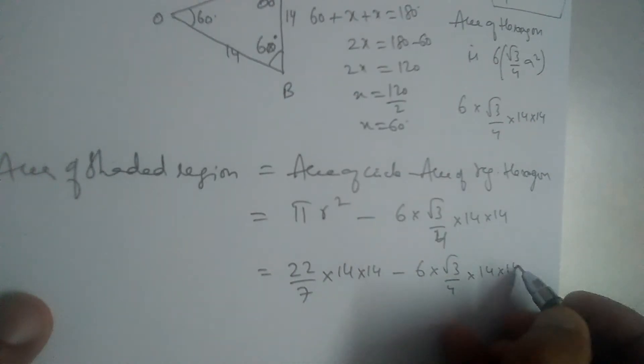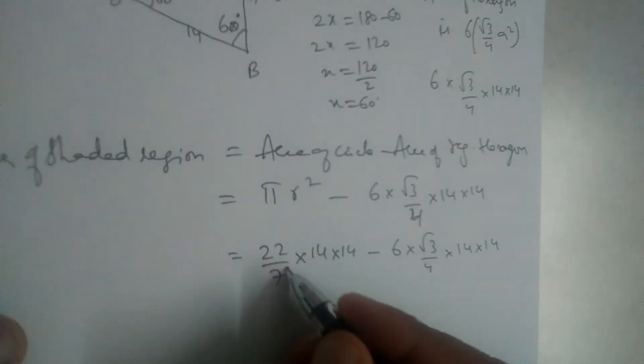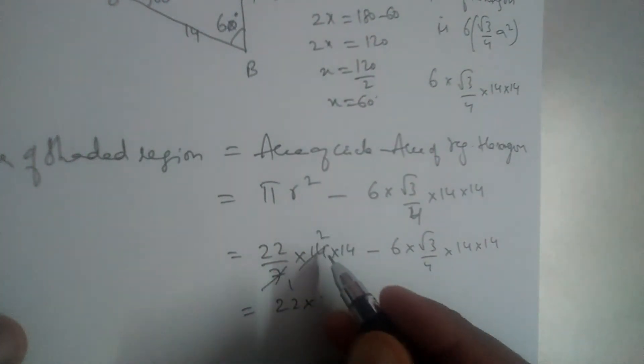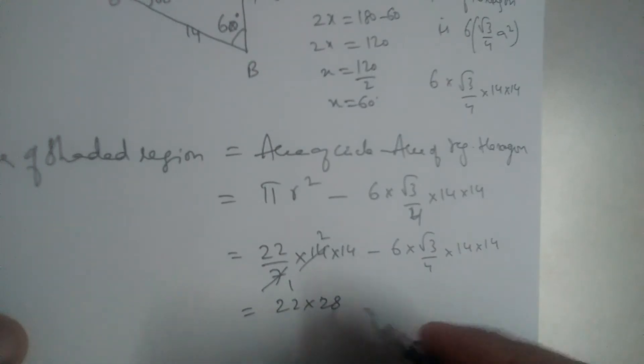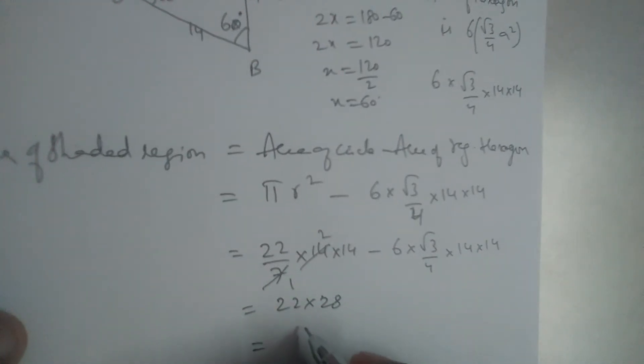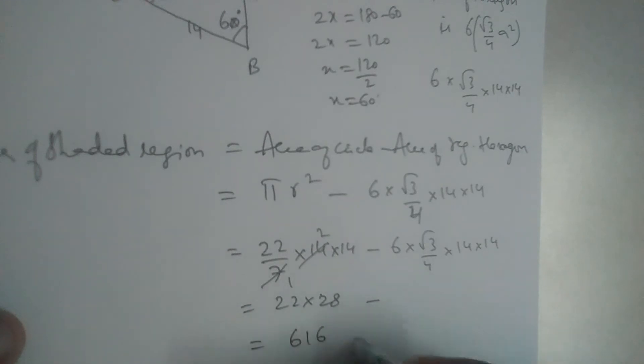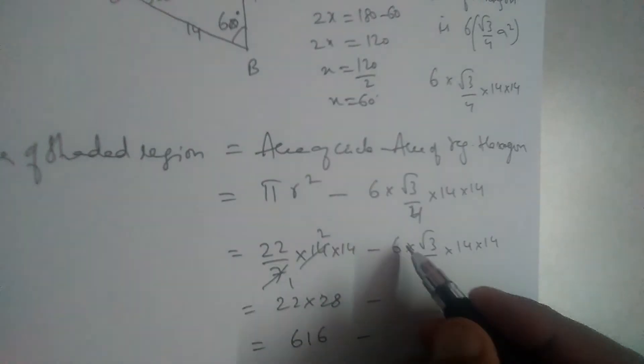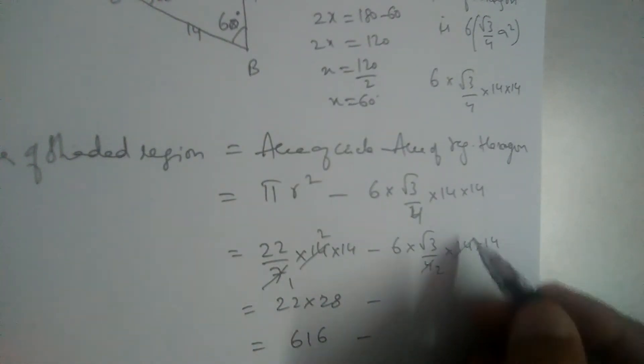So let us cancel one by one. 7 goes into 22 and into 28. So 6 goes into 6. Minus, 6 goes into 6, 28. This one is 2, 7 into 2 and into 3.